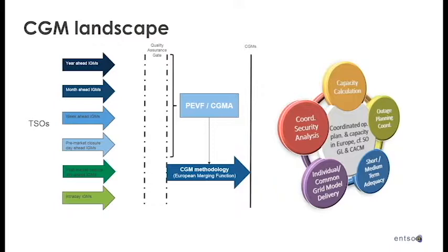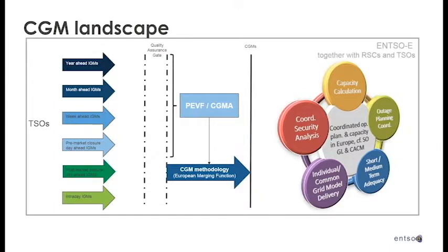Once the common grid model is available, it would be used by all the services which require network information — be it capacity calculation, coordinated security analysis, outage planning, coordination, or short and medium term adequacy. Most of these functions are known to you through network code. This is a critical function from the program that ENTSO-E provides the platform for, with TSOs and RSCs connecting their functions to the platform.